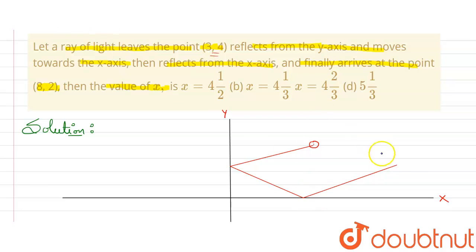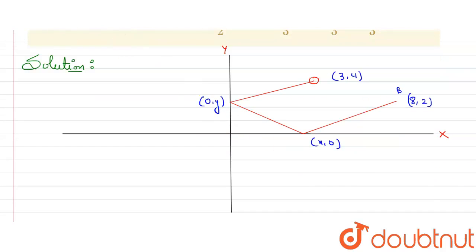So suppose this is the point here, the final arrival. This coordinate will be (8,2). And suppose this is point B, and its coordinates are also given (3,4). So what will the coordinate here be? It will be (0,y), and this one will be (x,0) because here y is 0.